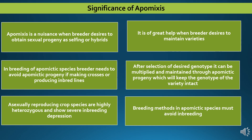Regarding the significance of apomixis: apomixis is not convenient when breeders desire to make sexual progeny by selfing or hybrid development, but apomixis plays an important role and is of great help when varietal maintenance is required. Inbreeding of apomictic species needs to avoid apomictic progeny if there is a need to make crosses or produce inbred lines. To keep the genotype of the variety intact, a properly selected desired genotype can be multiplied and maintained through apomictic progeny.